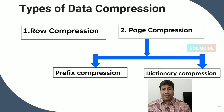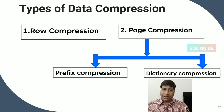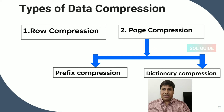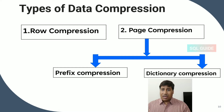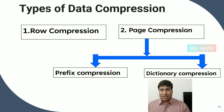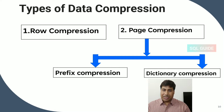SQL Server has two types of data compression: row level and page level. Page level data compression includes two additional techniques: prefix compression and dictionary compression.